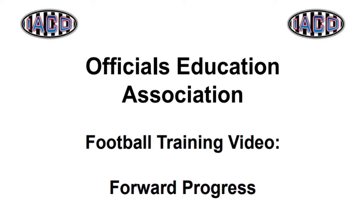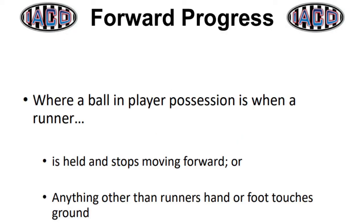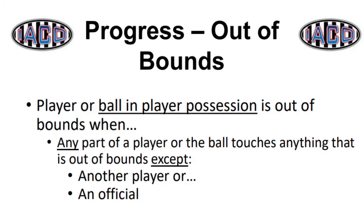The topic of this video is forward progress. When a ball is in player possession, forward progress is the foremost point of the ball when the player is held so that he stops moving forward, or anything other than the runner's hand or foot touches the ground. A player or ball in player possession is out of bounds and forward progress is stopped when any part of the player or the ball touches anything that is out of bounds, except another player or an official.